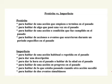Use the preterite, el pretérito, para hablar de una acción que empieza o termina en el pasado — to talk about the beginning or end of an action, event, or condition. También se usa el pretérito para hablar de algo que pasó una vez en el pasado, a single occurrence. Se usa también el pretérito para hablar de una acción o condición que fue cumplida en el pasado, a completed past action.